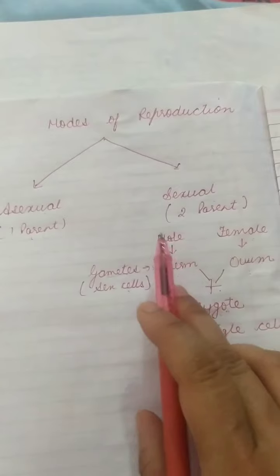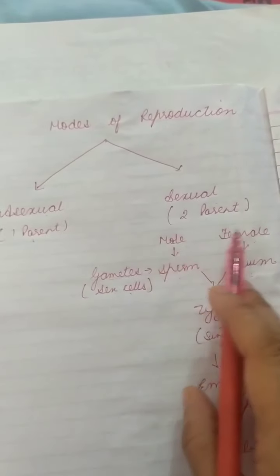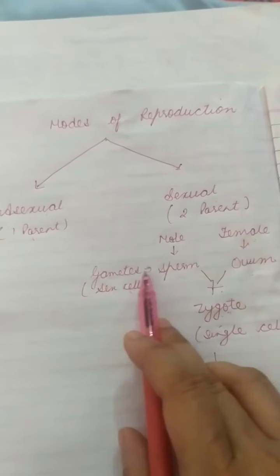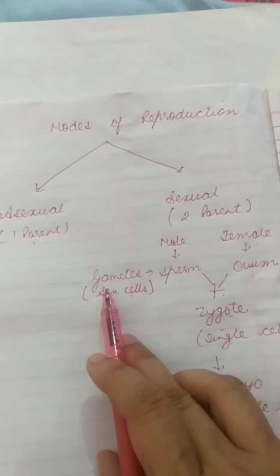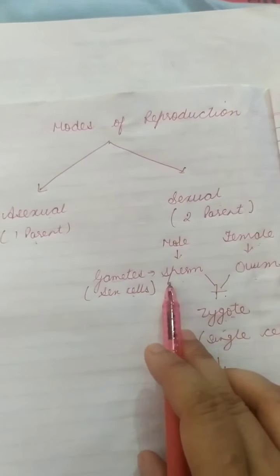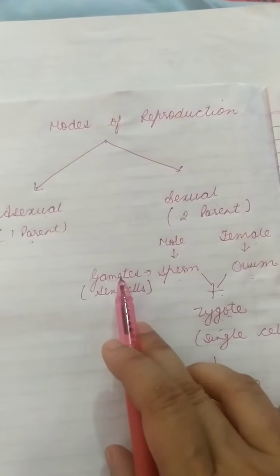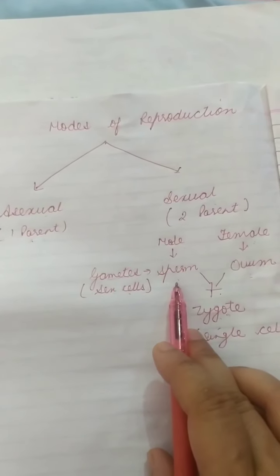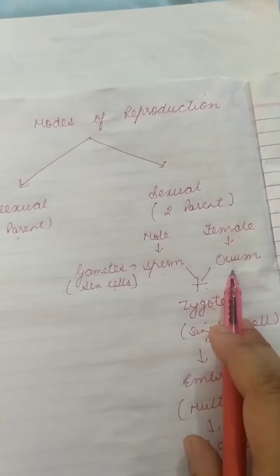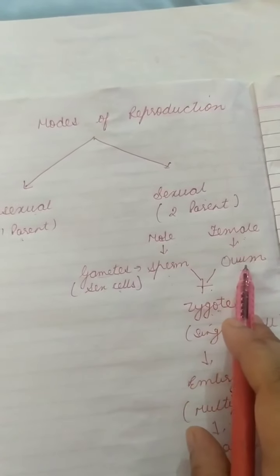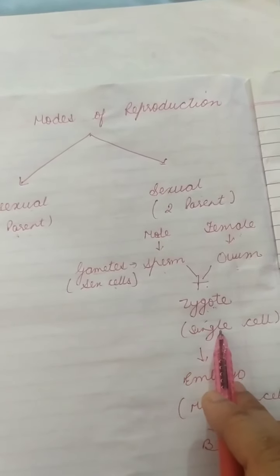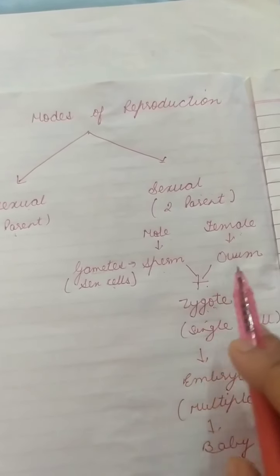In sexual reproduction, both male and female have sex cells which are known as gametes. Gametes are the sex cells. The gamete of male is known as sperm and the gamete of female is known as ovum. When both sperm and ovum fuse together, they give rise to a single cell known as the zygote.